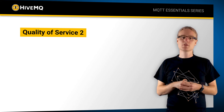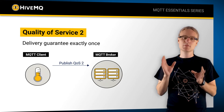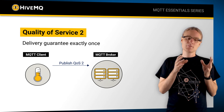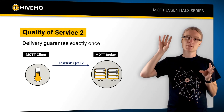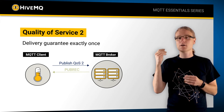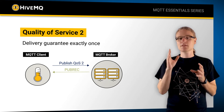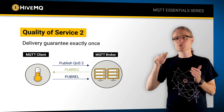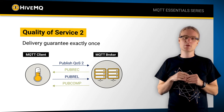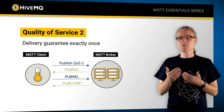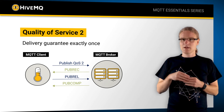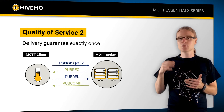Quality of service two means exactly once delivery. MQTT ensures this through a flow of four different MQTT packets. The client sends a PUBLISH packet to the broker. The broker responds with a PUBREC packet. The client then sends a PUBREL packet. Finally, the broker responds with a PUBCOMP packet. If anything goes wrong in between, the flow is continued where it left off, ensuring the message is processed exactly once. As you can see, this is more expensive on the wire because you need to send more packets.